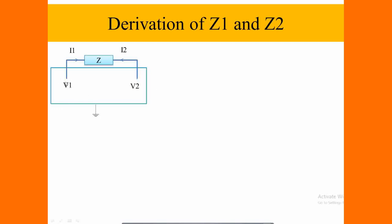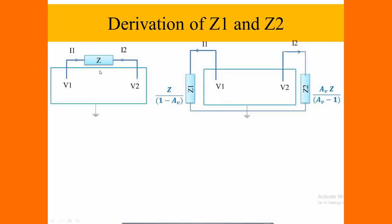The current flowing from V1 is I1, current flowing from V2 is I2. It has been replaced as like this. We are splitting the Z into two parts as Z1 and Z2 from the corresponding node to the reference.